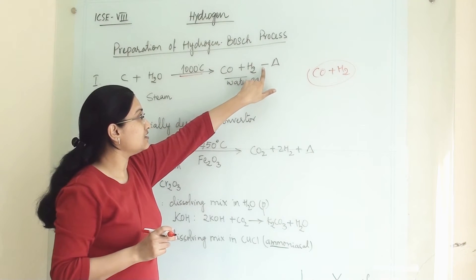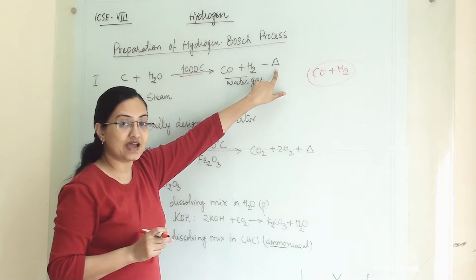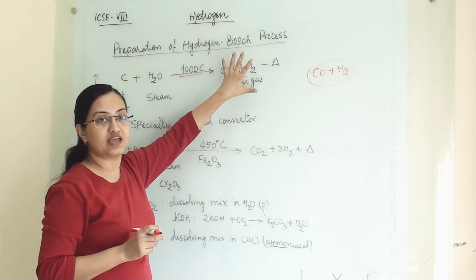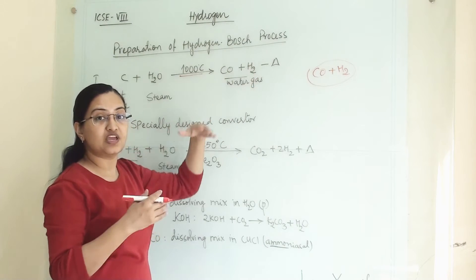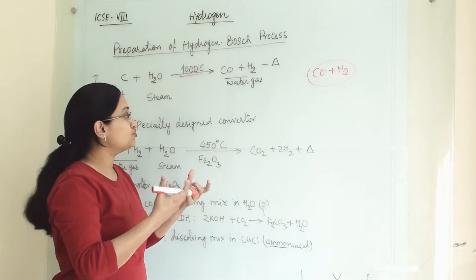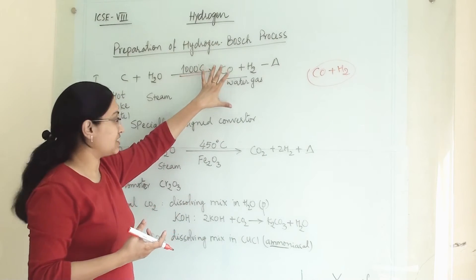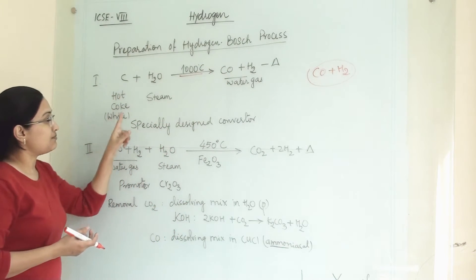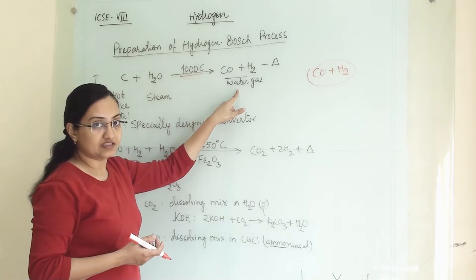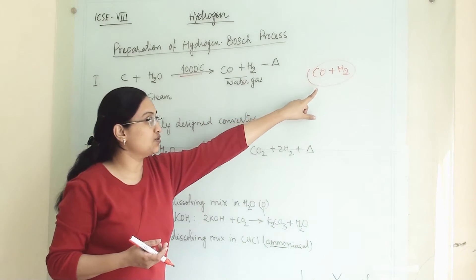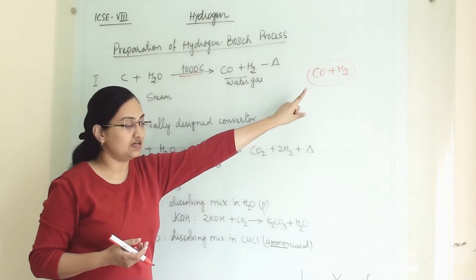This reaction, when minus delta H is there, that means this reaction is endothermic. That means we have to give energy to perform this reaction. So in first step we will get water gas, which is a mixture of carbon monoxide and hydrogen gas.